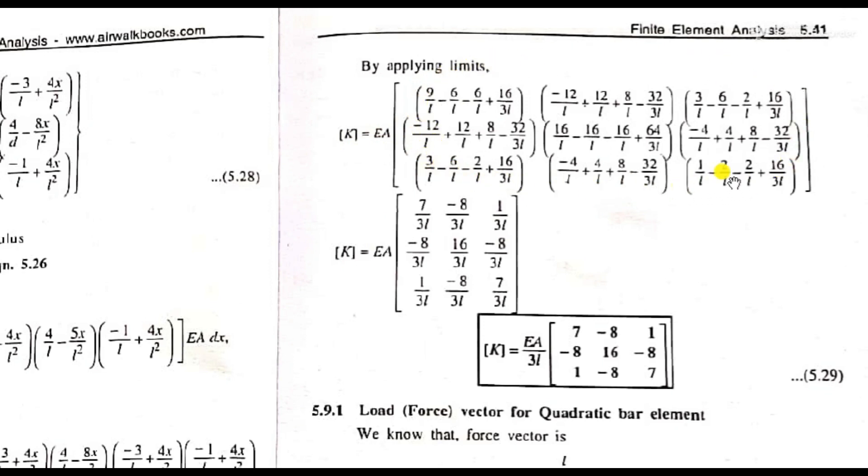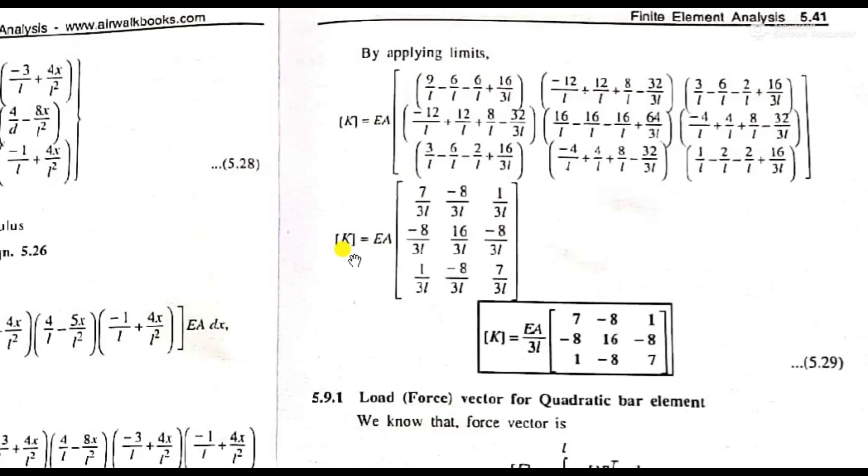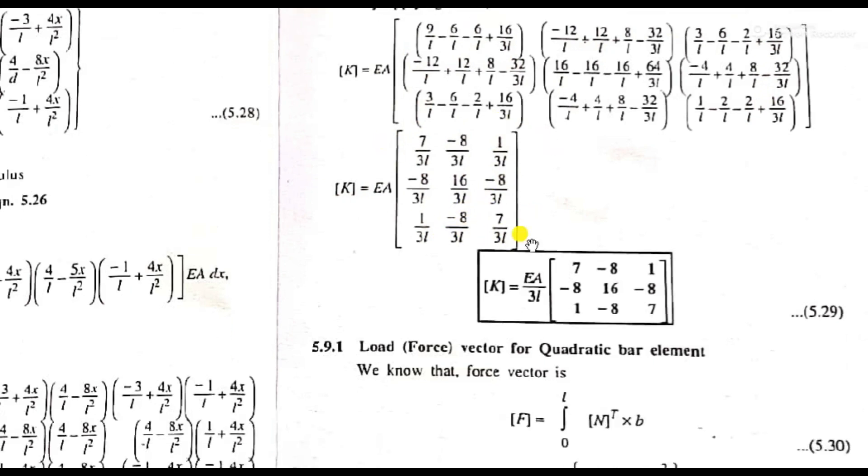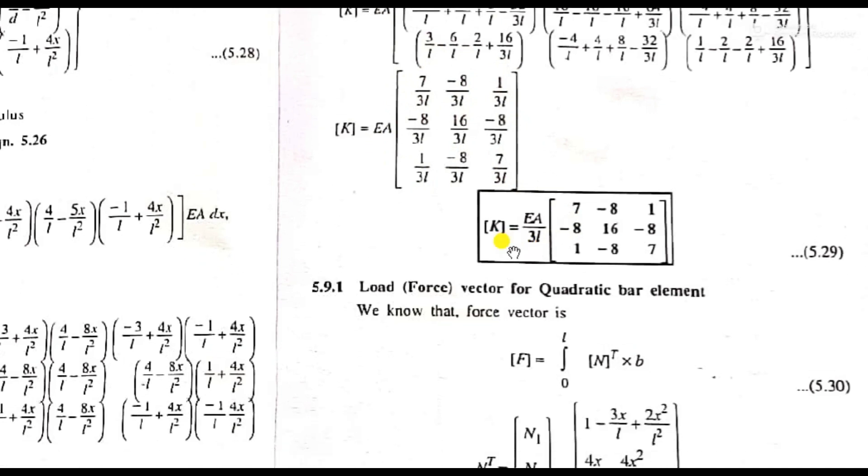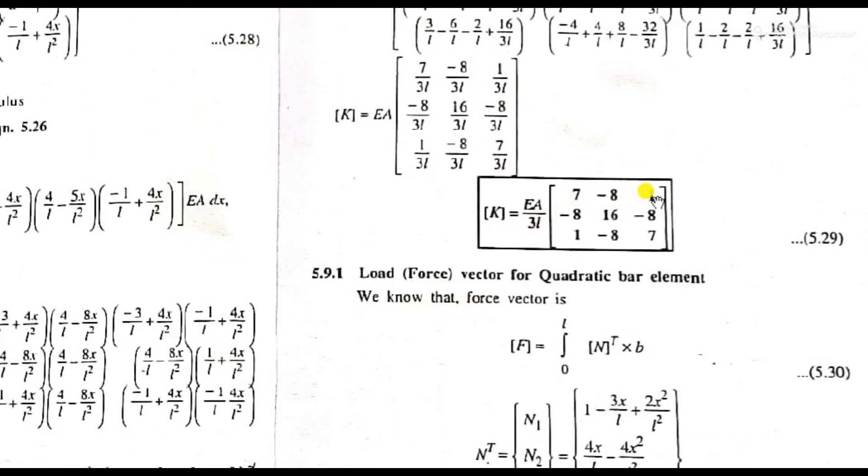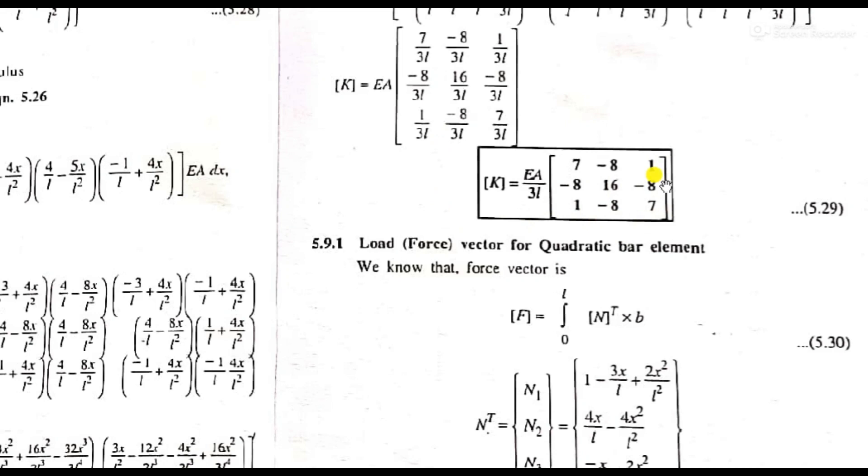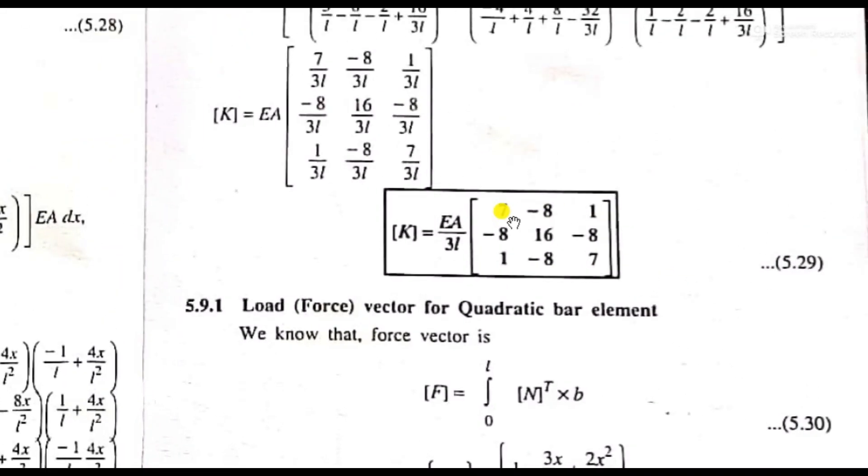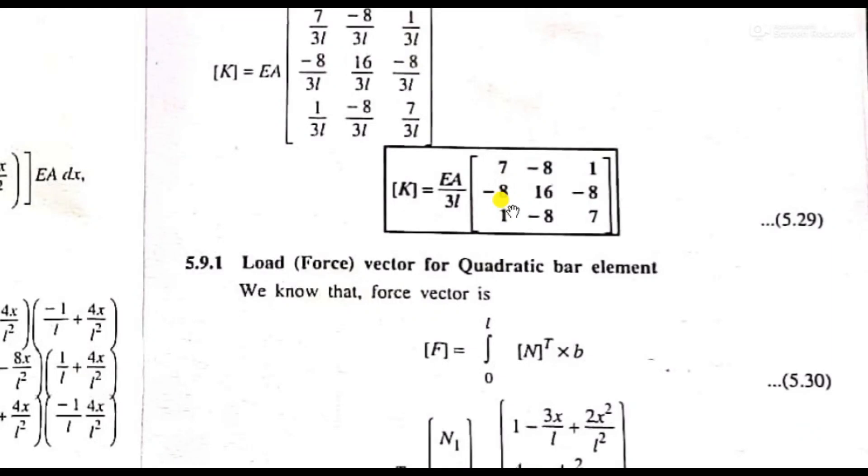After integration, the answer is EA/3L times the matrix [7 -8 1; -8 16 -8; 1 -8 7]. This is the stiffness matrix for the quadratic bar element. We have successfully calculated the stiffness matrix.